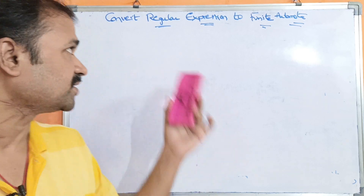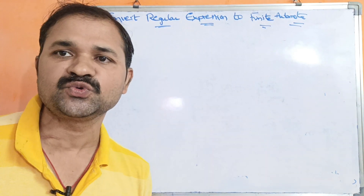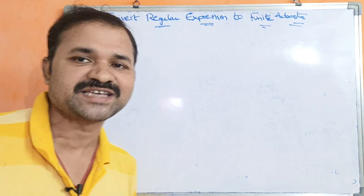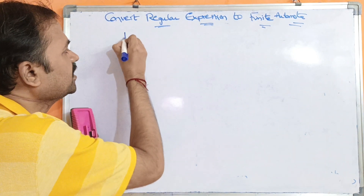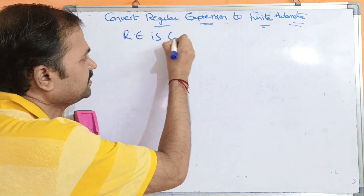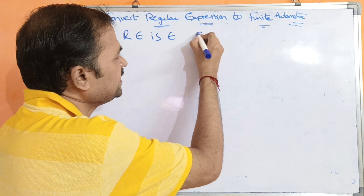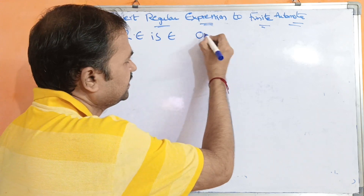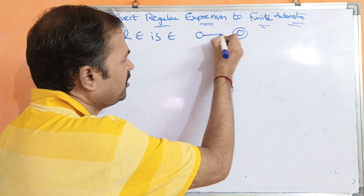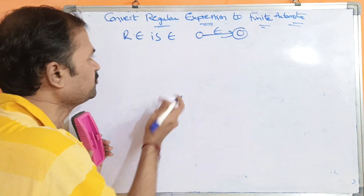Let us discuss converting a regular expression into finite automata with the help of an example. If the regular expression is epsilon, we require two states. Let one be the final state. Applying epsilon on the initial state, we can move to the final state.